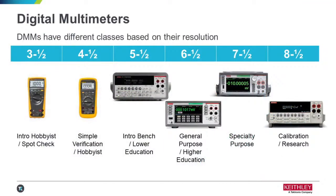Looking at the different classes of DMMs — a lot of times online I see people wondering why 6.5-digit DMMs exist at all. DMMs are broken into categories largely based on their resolution, the number of digits they qualify for. Today we're talking about 6.5-digit DMMs. They sit in the middle, with the 7.5-digit as the bigger brother for more specialty purposes, and the 5.5-digit great for intro benches.